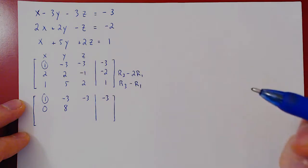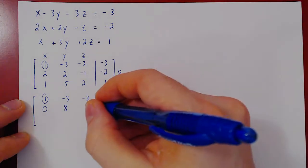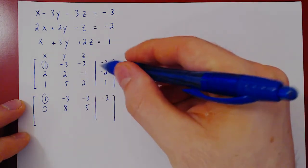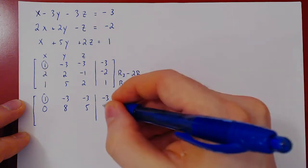Negative 1 minus 2 times negative 3 is positive 6, which is 5. Same thing here: 6 minus 4, 6 minus 2, 4.